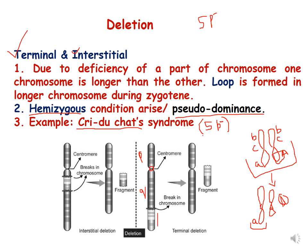An example of deletion is Cri-du-chat syndrome, which is designated as 5P-, meaning that the short arm (represented by P) of the fifth chromosome has some deletion.